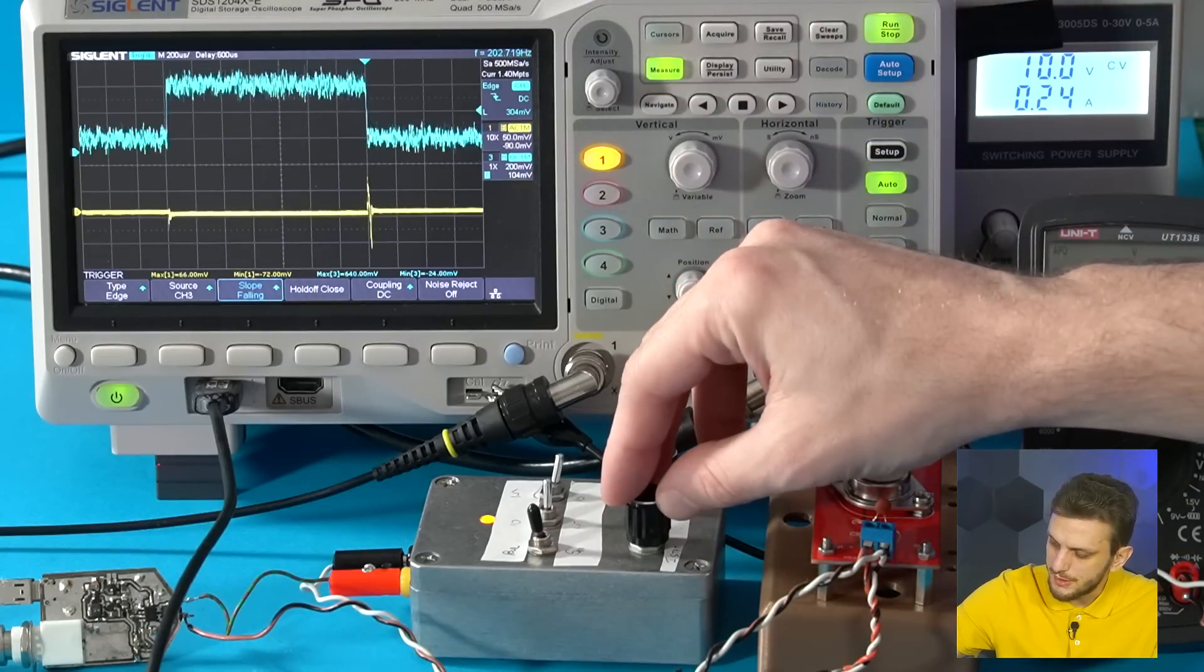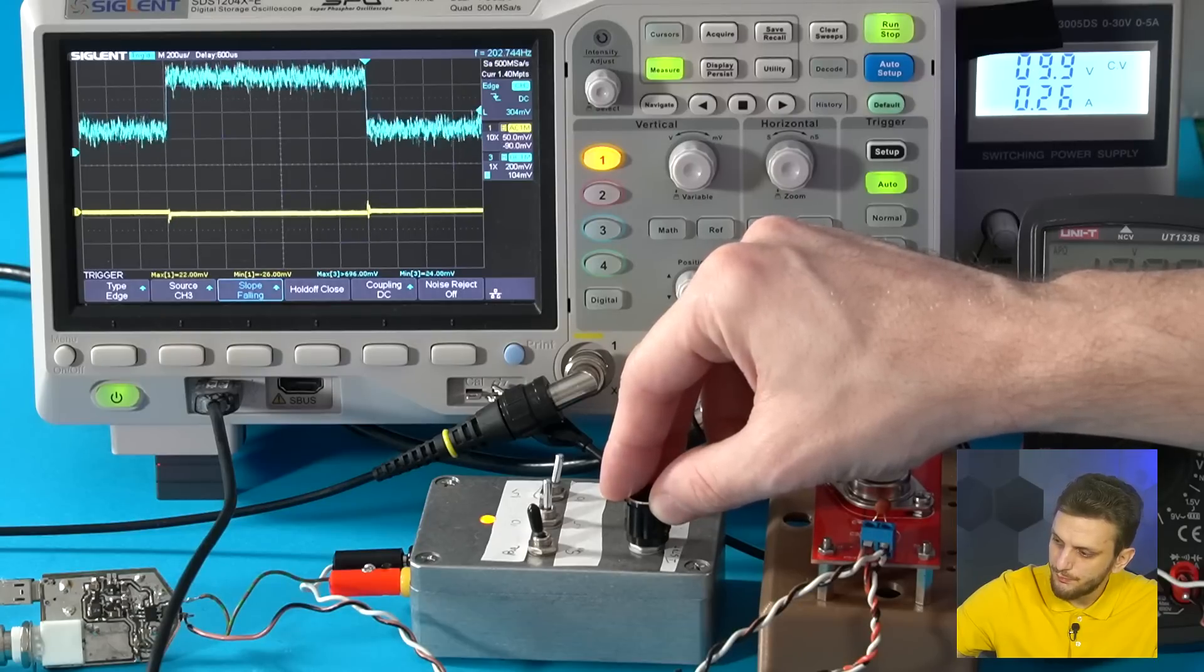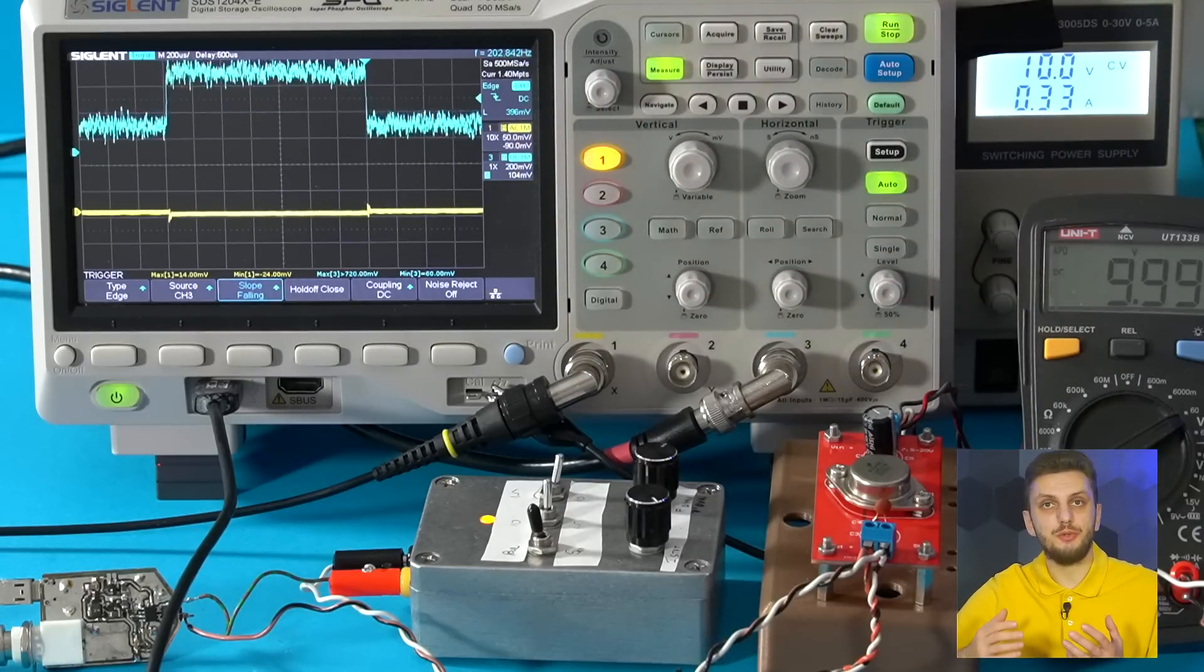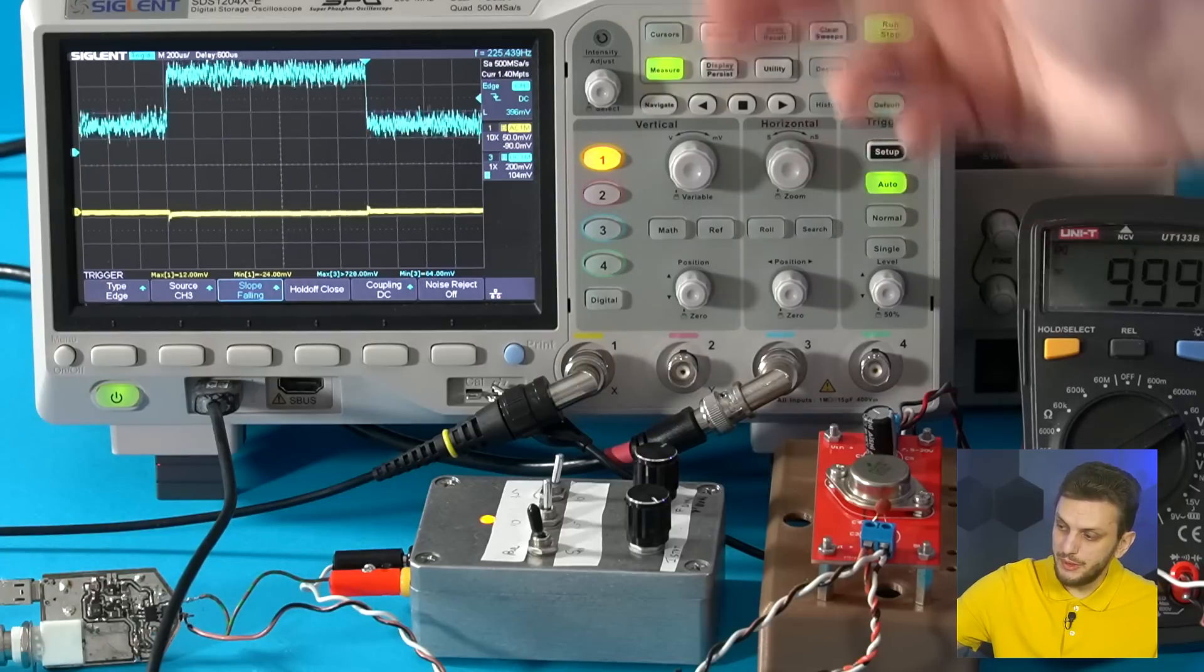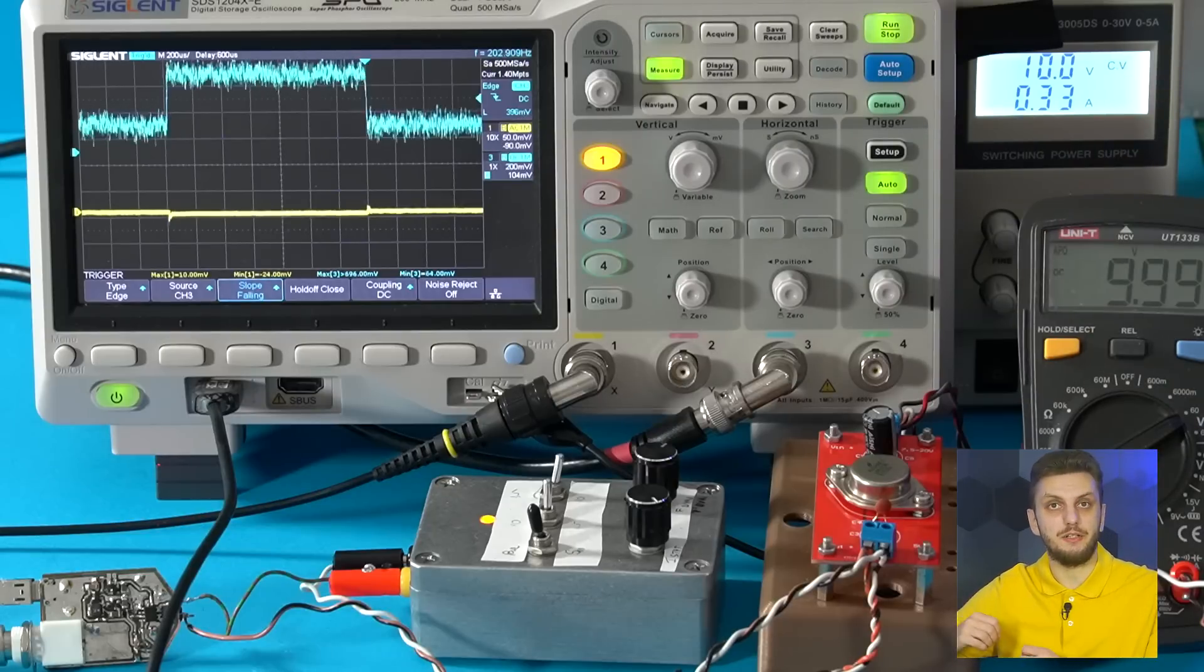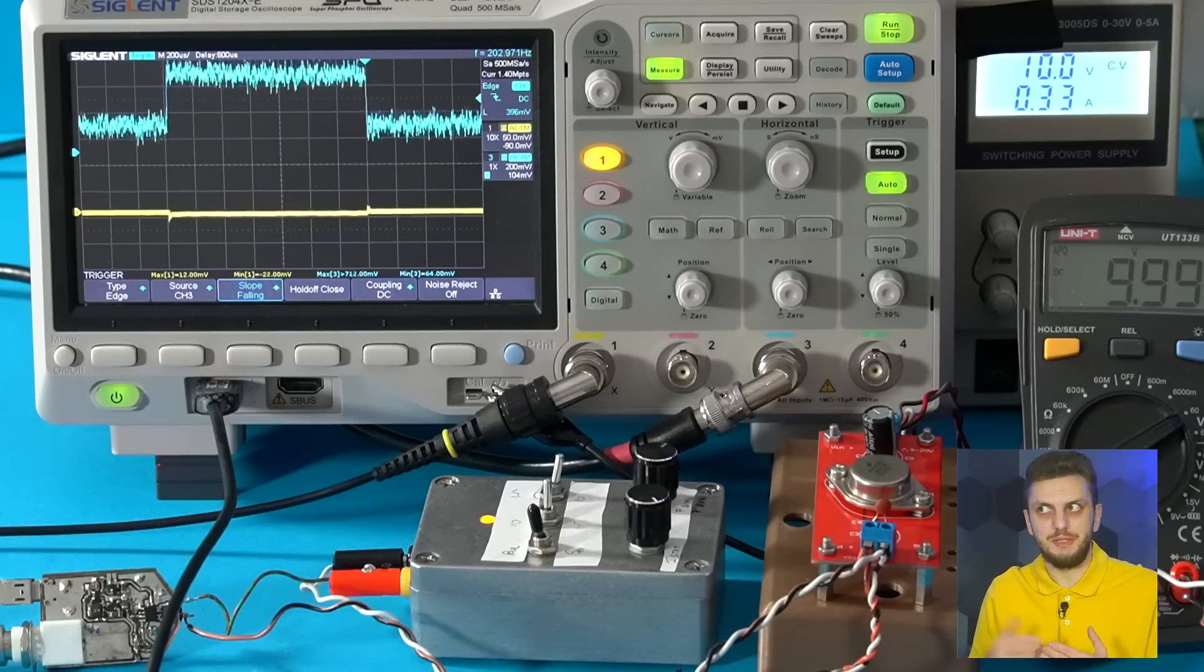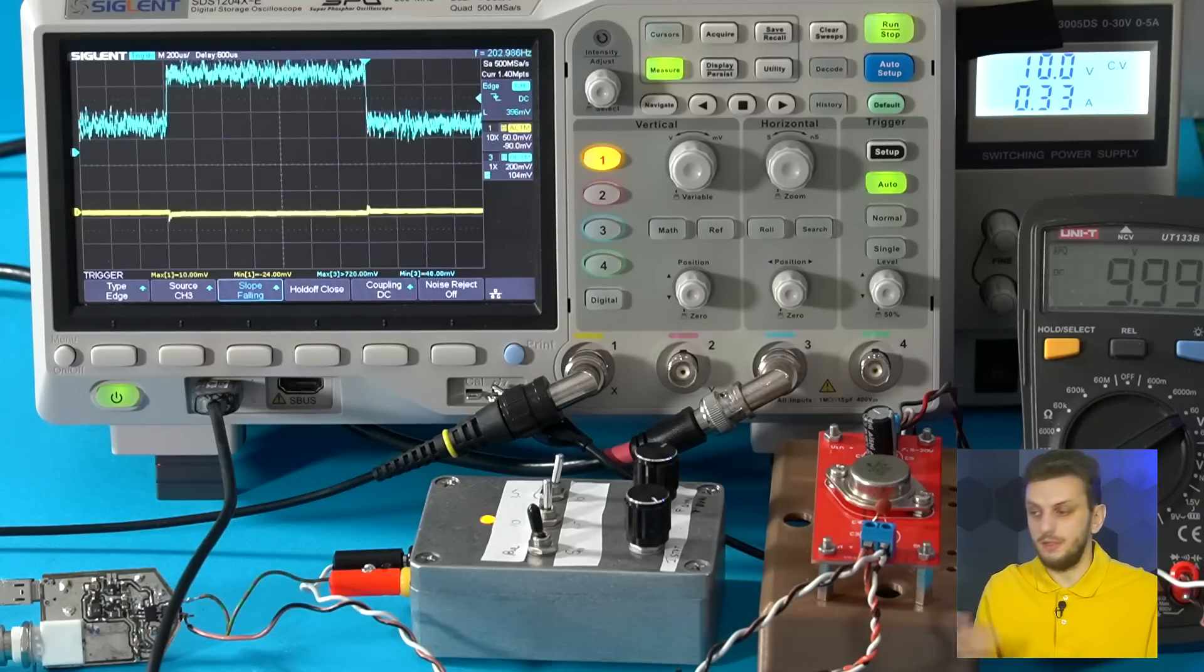Another thing we can observe is that when we start adding in a certain amount of static load, the response of the power supply changes. So this particular power supply has a different response when the current steps from zero to some value, compared to when current steps from a fixed non-zero value to a higher value. And this is typical in most cases. The two transitions, zero to something and something to something even bigger, will usually be different, so they both need to be tested and observed.